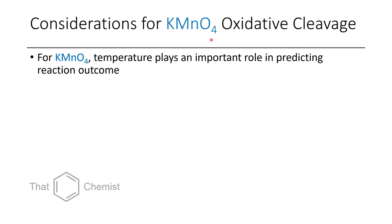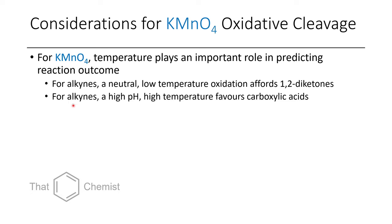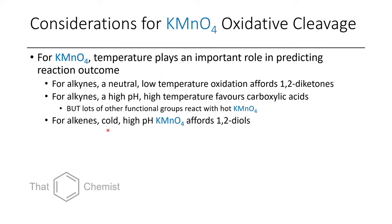Some considerations when working with potassium permanganate involve the reaction conditions, and temperature plays an important role in predicting reaction outcome. If you have an alkyne and the solution is neutral at low temperature, you'll tend to get 1,2-diketones instead of carboxylic acids. If you use alkynes under more basic conditions at high temperatures, you'll tend to get carboxylic acids. If you're using alkenes at cold temperature with a high pH, potassium permanganate can form a 1,2-diol — this would be dihydroxylation of an alkene, which is a topic we'll talk about in the next video.